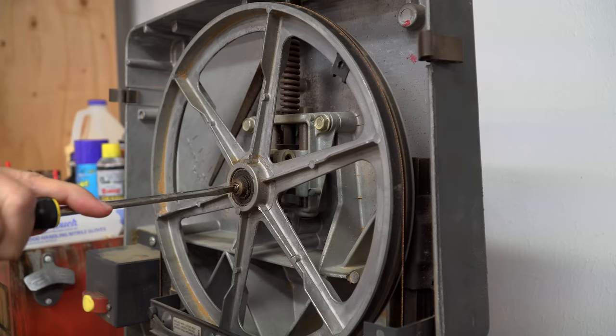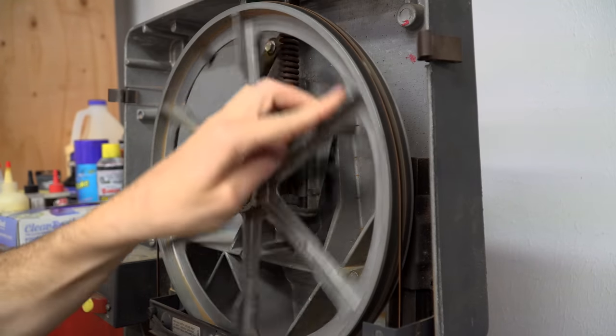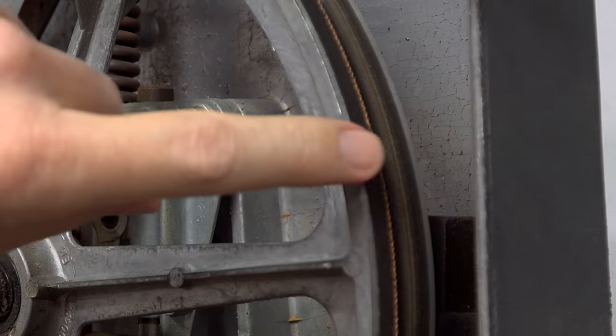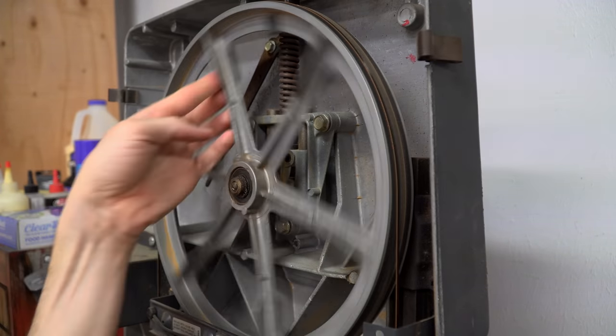Turning the tracking screw will either tilt the wheel towards you or away from you, which will cause the blade to move either towards you or away from you. Adjust the blade so that it's right in the center of the wheel.